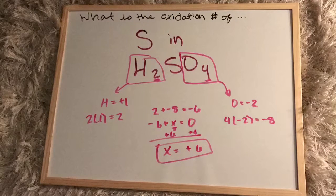But since the charge of the compound is zero, we have to do some algebra. So negative six plus x equals zero. That x is the oxidation number of sulfur, which we algebraically figure out to be positive six.